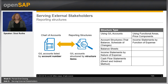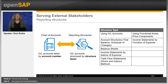Some structure types contain fixed structure items which provide certain calculations such as totals or balances. A balance sheet, for example, always contains assets, liabilities, equity and a balance sheet result. An income statement always contains the profit and loss result. A cash flow statement always contains operating activities, investing activities, financing activities and net increase in cash and cash equivalents. Reporting structures of the structure type income statements by function of expense are not based on general ledger accounts but on functional areas and price components.